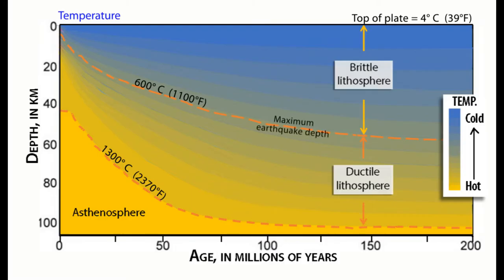The upper plate is less than 600 degrees centigrade, thus is the only part of the plate cold and brittle enough to fracture and produce earthquakes.